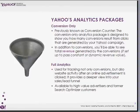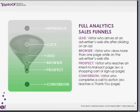We have impressions on the top end of this chart. Impressions are simply the advertiser's ad being displayed and seen by a visitor. From there we have a click — a click is when a visitor clicks on the advertiser's ad. A lead is calculated when the visitor actually makes it to the advertiser's page. A browser is a visitor who views more than one page while on the advertiser's site. A prospect is a visitor who reaches an intent-to-transact page. And a conversion is a visitor who completes a call to action, such as buying something or signing up for something.